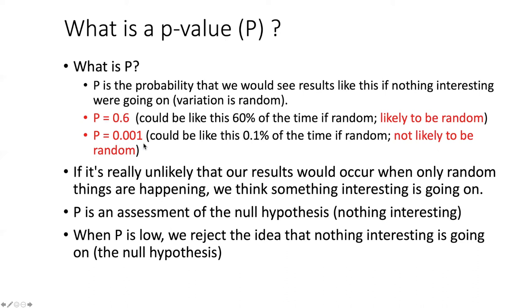On the other hand, if p is 0.001, that means that only about 0.1% of the time would we get results like this if it was simply due to random chance. That's really not very likely. And so it essentially gives us an assessment that says it's not very likely that the change that we see is random.